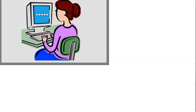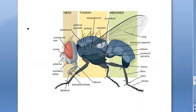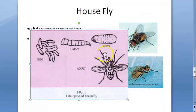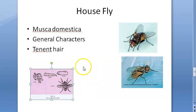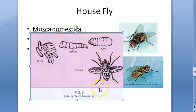The legs and body have short stiff hairs called tenant hair. These secrete a sticky substance. The abdomen is segmented and shows light and dark markings. So the three main parts are head, thorax, and abdomen.